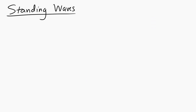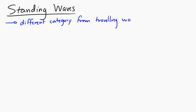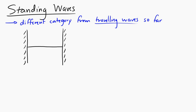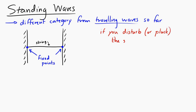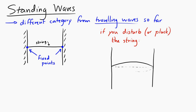Let's take a look at standing waves. Standing waves are a separate category from the traveling waves we've considered previously. A good way to start thinking about standing waves is to imagine a string between two fixed walls. The points where the string attaches to the wall are called fixed points — the string can't move there. If you disturb the string, like plucking it, it's going to oscillate. Every point on the string will oscillate up and down except at those fixed ends, vibrating back and forth around the equilibrium position.